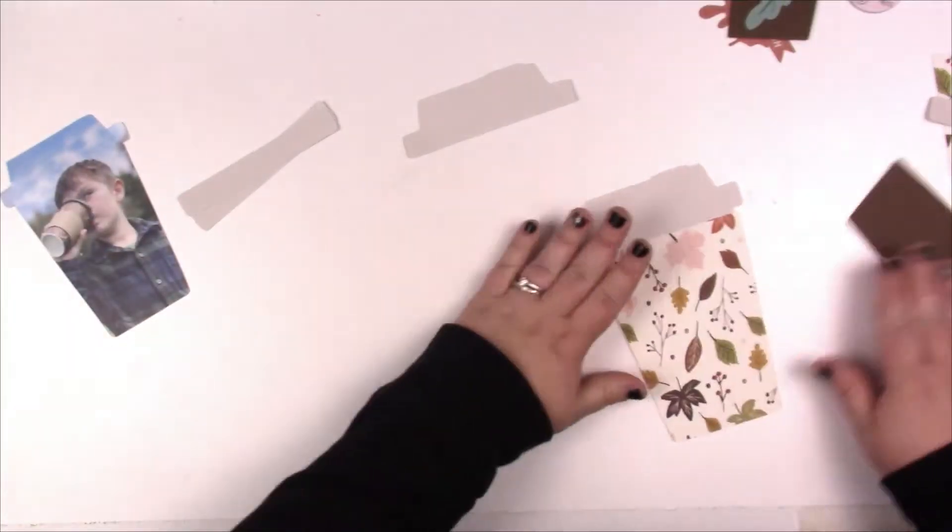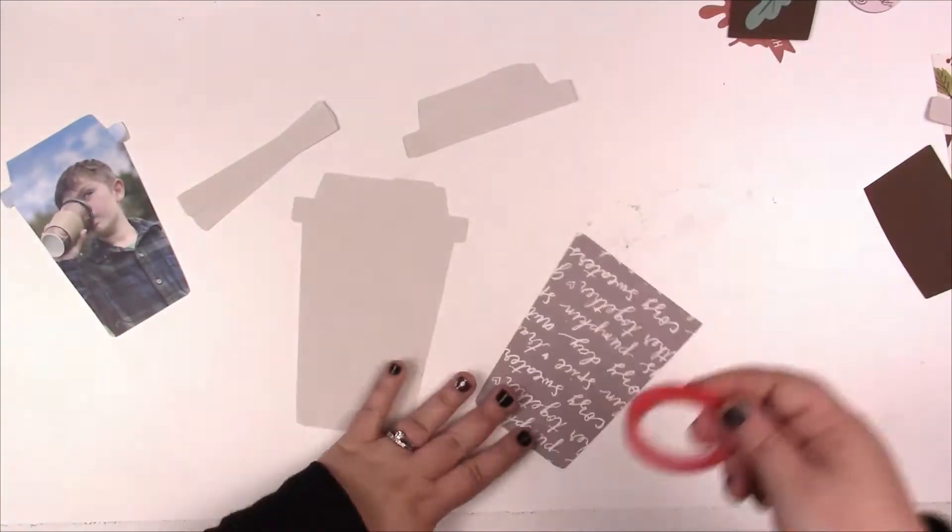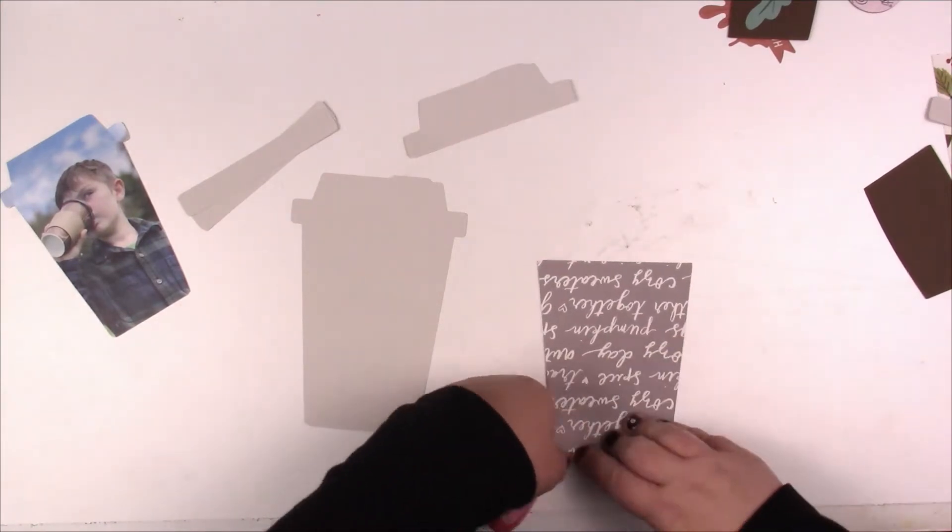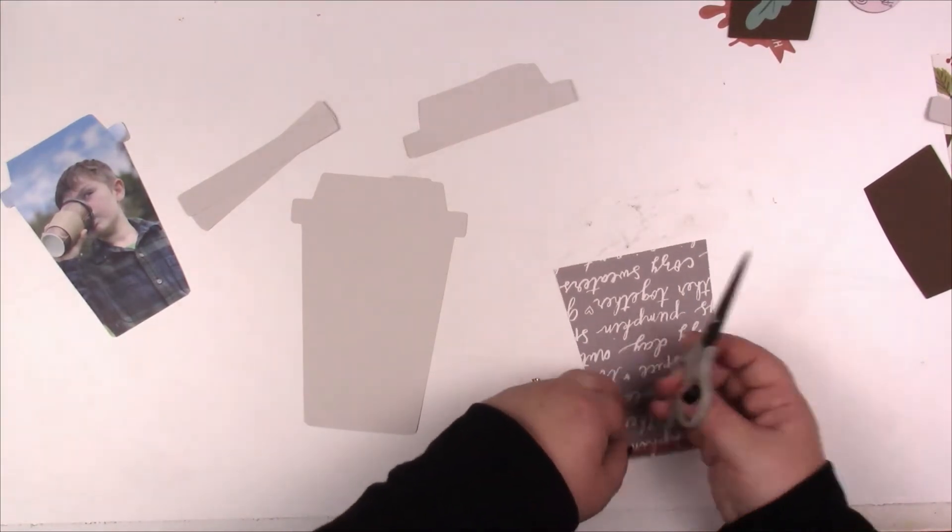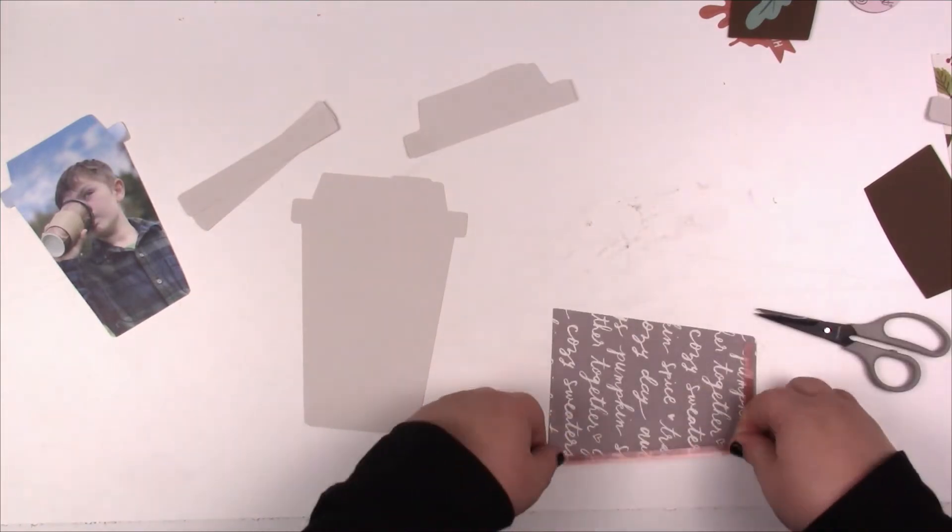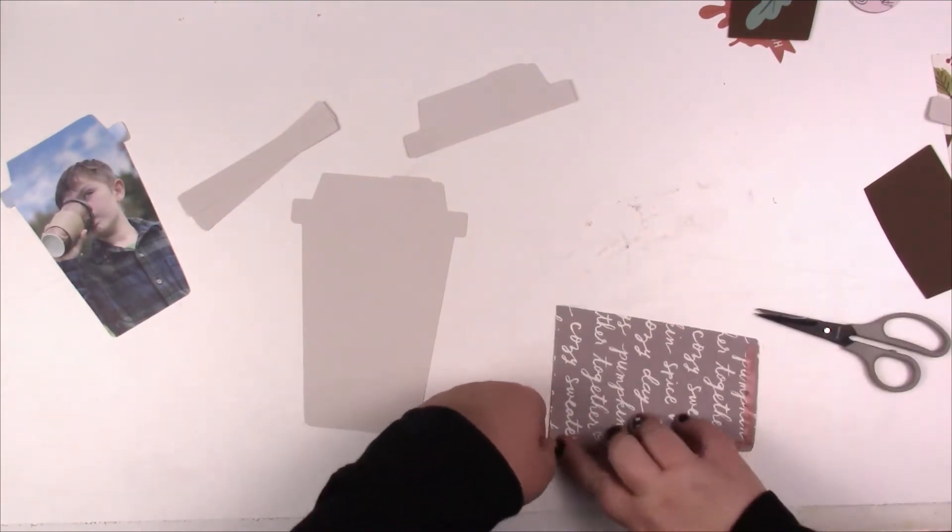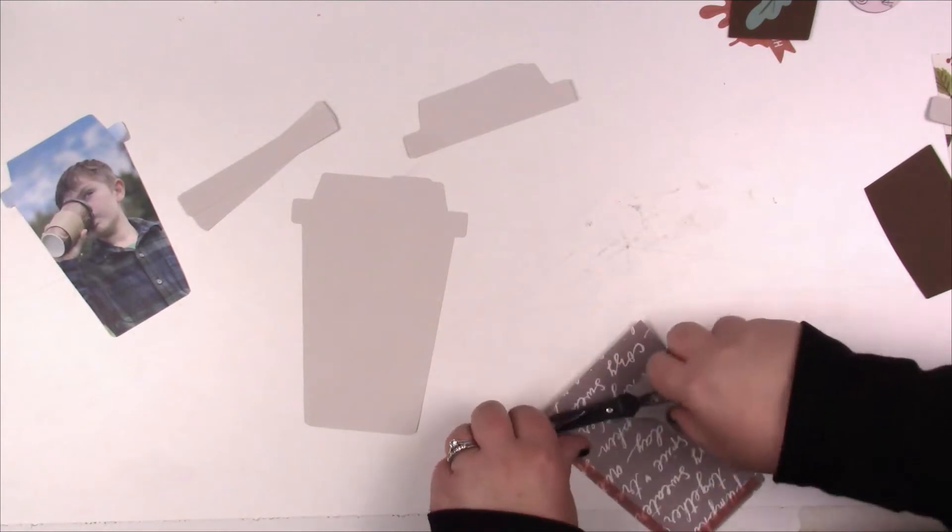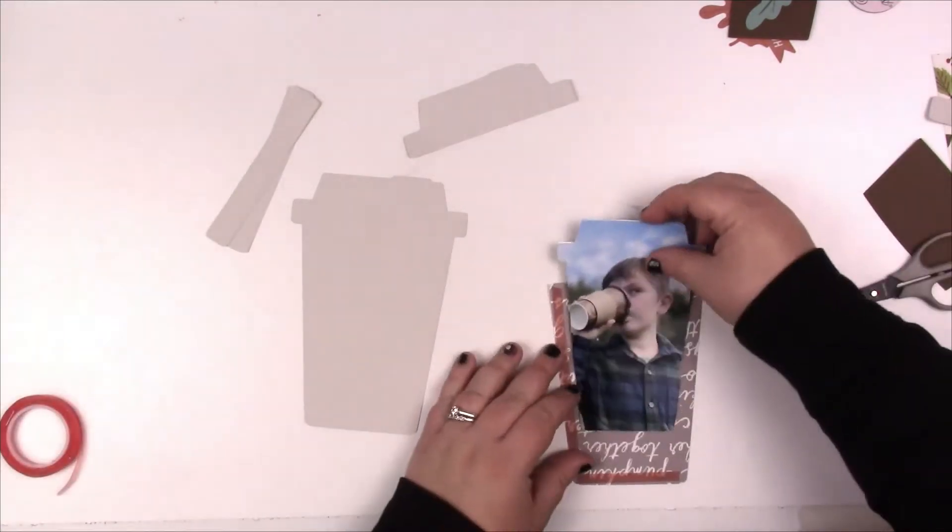We're using redline tape to attach the front part which is going to be the pocket. I like to use redline when something's going to be opened and closed a lot—it's just a little bit more durable.